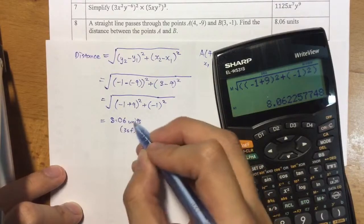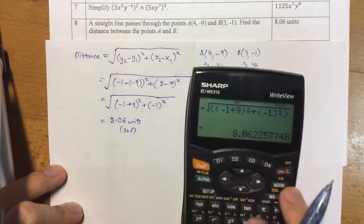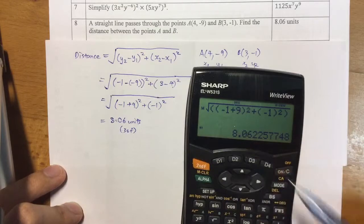In coordinate geometry there are no specific units, so we just call it units. There you go, that's the answer: 8.06 units.